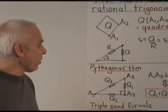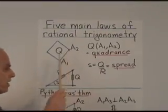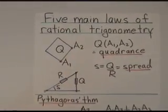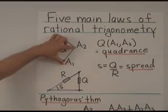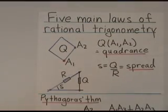First, let's summarize what we already know. If you have two points, a1 and a2, then the quadrants between them is by definition the area of a square built on that segment. That's the square of the usual distance.